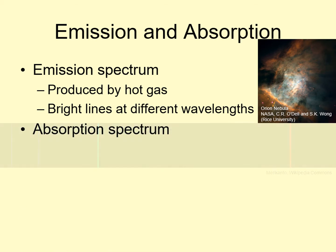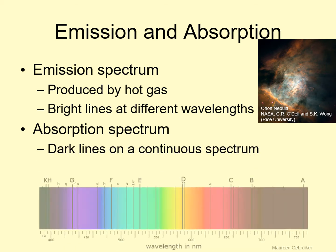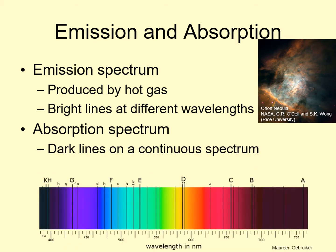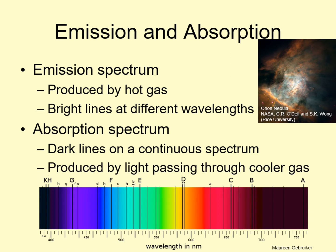An absorption spectrum is the opposite. Instead of bright lines on a dark background, it consists of dark lines on a bright background. Absorption lines are formed when a continuous spectrum, such as that from thermal radiation, passes through a thin gas. The gas absorbs light at very specific colors, producing the dark lines.